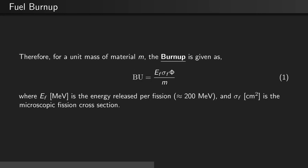Therefore, for a unit mass of material m, the burnup is given as the ratio of the energy released per fission times the fission cross-section times the fluence divided by the mass of the material.